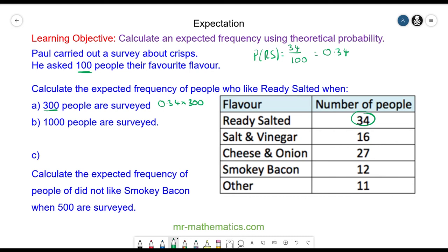This is 102 people. Again, this is what you would expect—it's not an exact figure but it is an expectation of 102 people choosing Ready Salted. And for 1000 people, the experimental probability multiplied by the sample is 340 people.